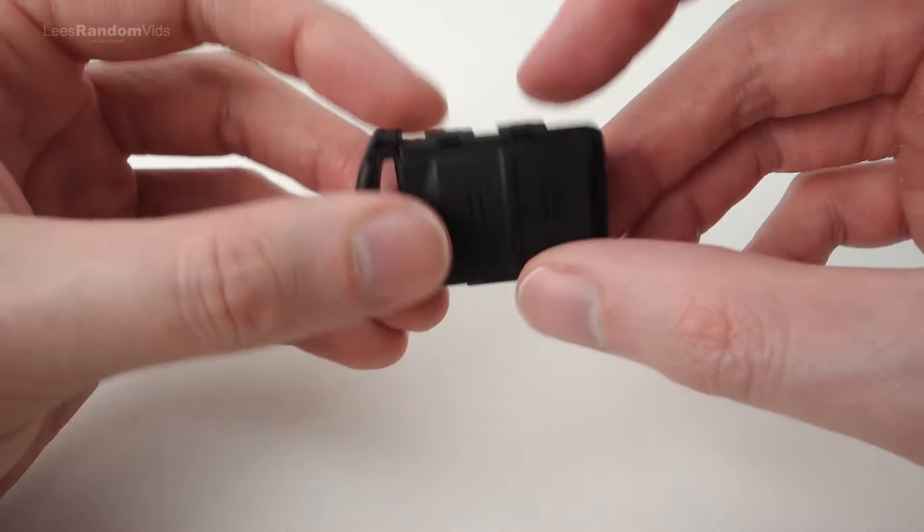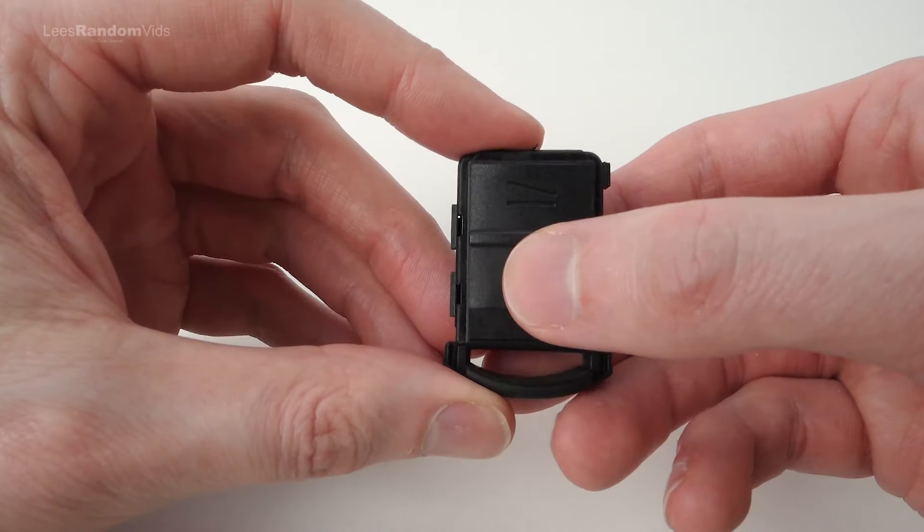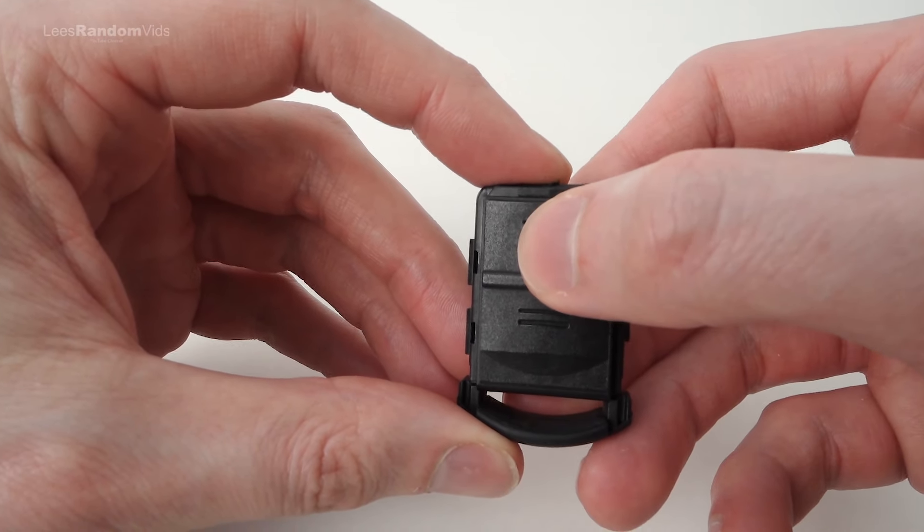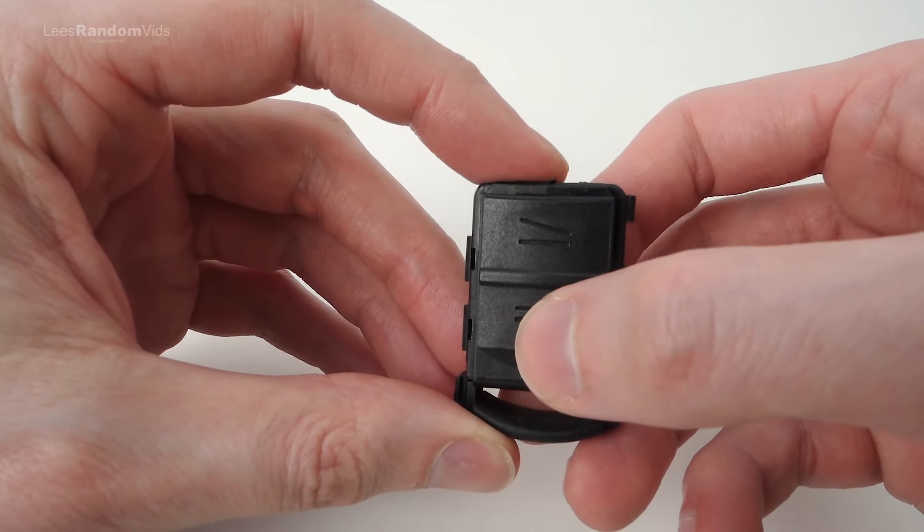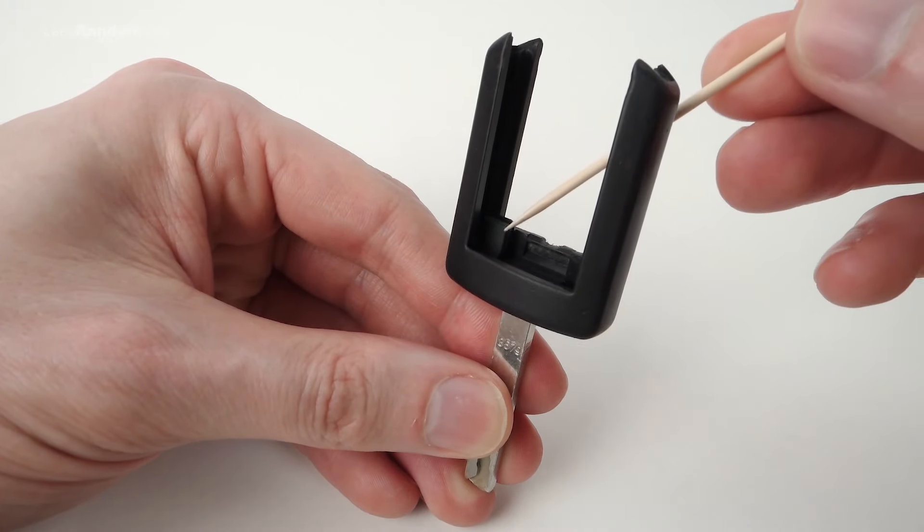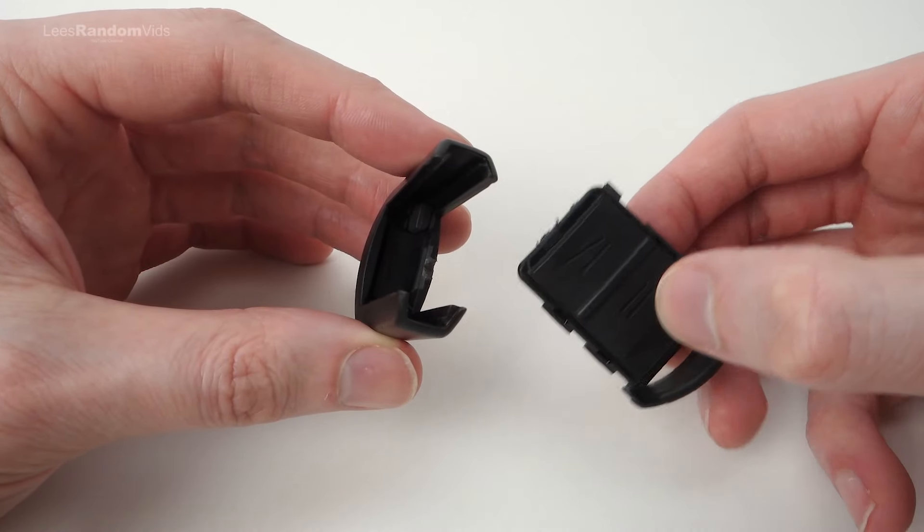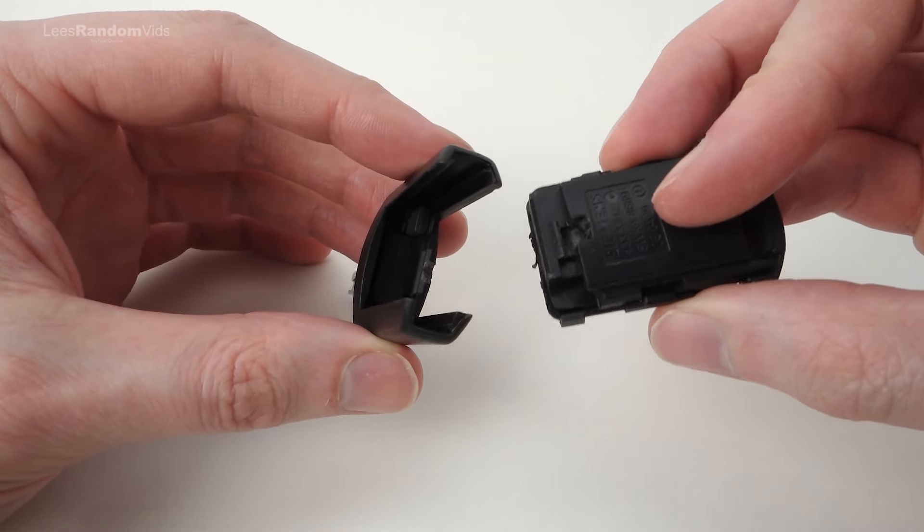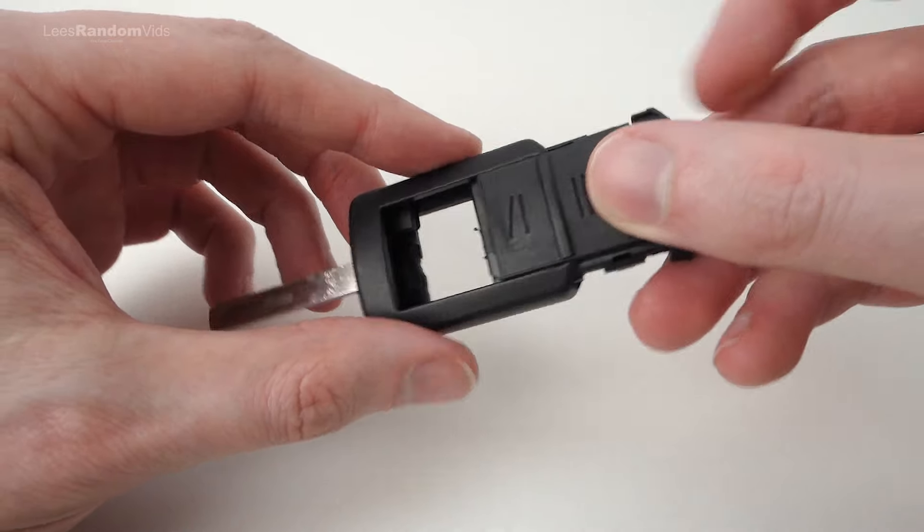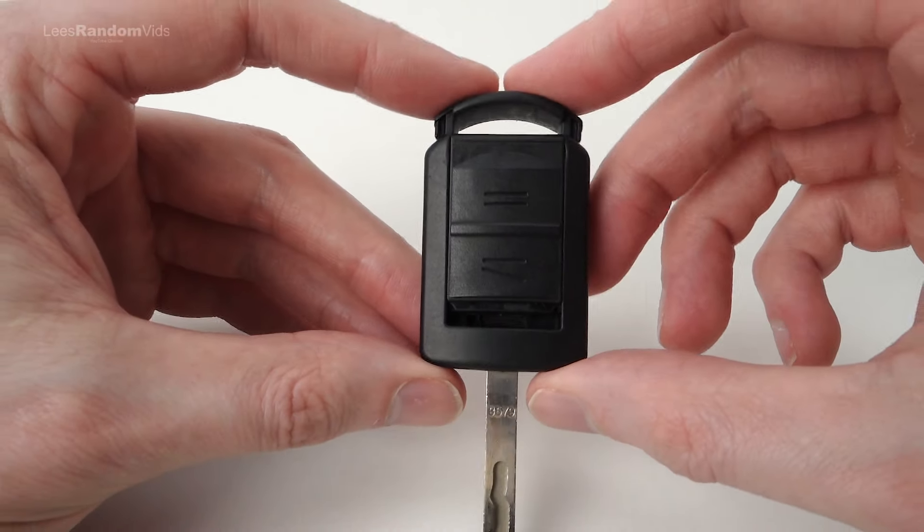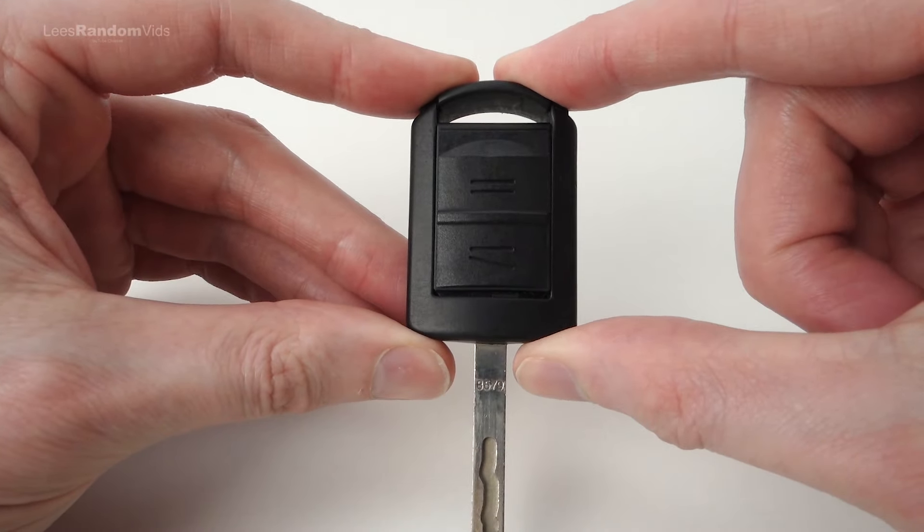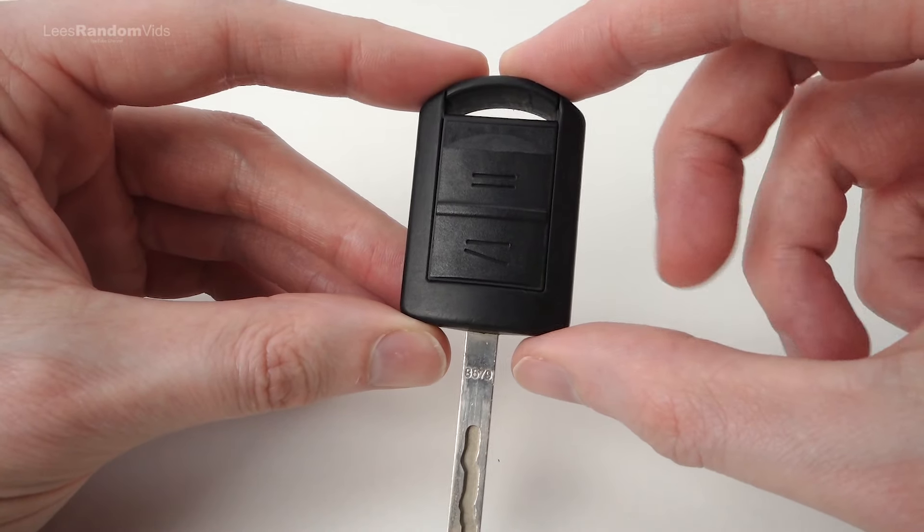You can actually test now if it's working by pressing the buttons. I'm pressing them here and I can just about hear my car opening and closing outside. Then finally, making sure the transponder chip is still in place, slide the two parts back together making sure you have it the right way around. This cutout here is for the transponder chip. It will only slide in one way anyway without using brute force. Then keep pressing until it clips into place. And that's it.